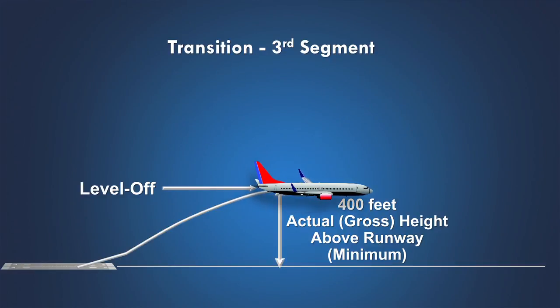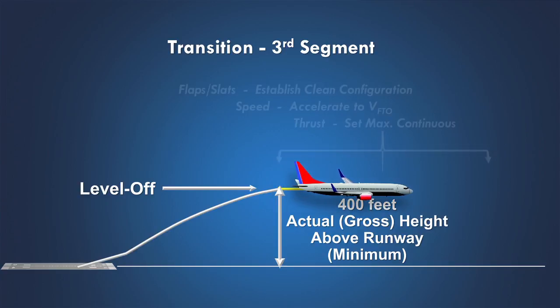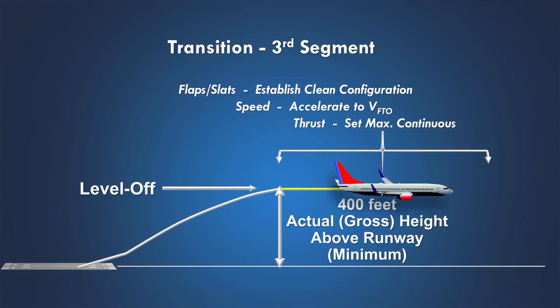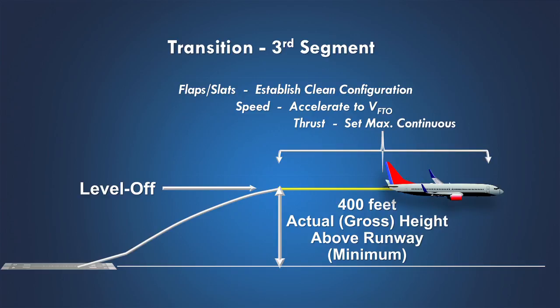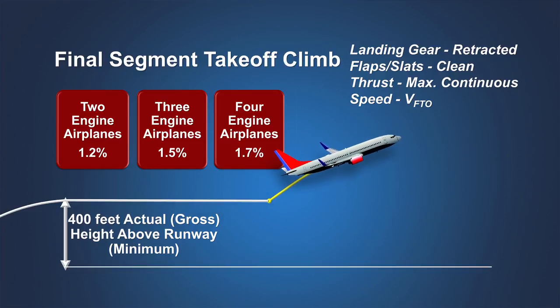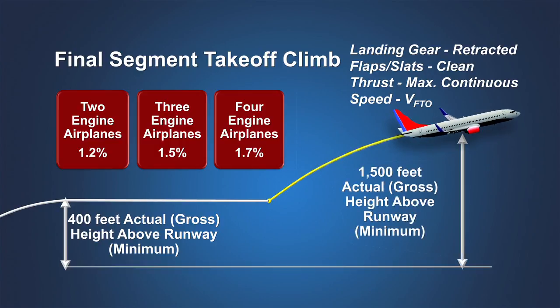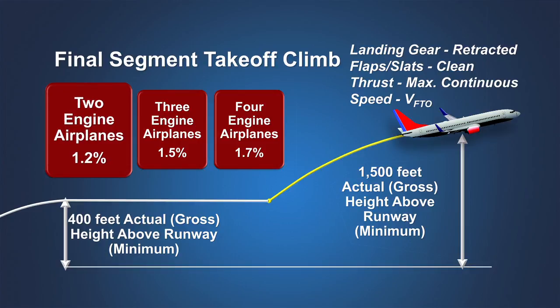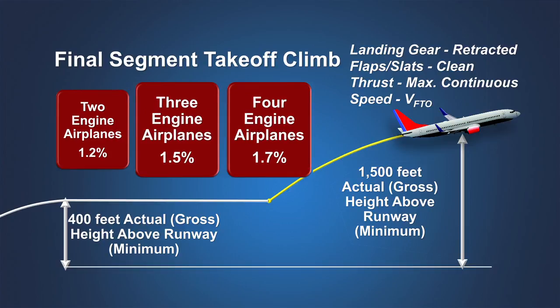Once the airplane has achieved at least 400 feet above the runway surface, the transition segment may begin. During this level flight segment, the airplane is accelerated to flap and slat retraction speed and then to the final takeoff airspeed. The transition segment ends when the airplane is in the clean en route configuration at an airspeed of not less than VFTO and when the remaining engines are set to maximum continuous thrust. If the airplane is less than 1,500 feet above the runway surface at the end of the transition segment, then the final takeoff segment begins at that point and extends until the airplane reaches at least 1,500 feet. At any point above 400 feet, a turbine-powered airplane with two engines must be capable of achieving a minimum climb gradient of 1.2% in still air.